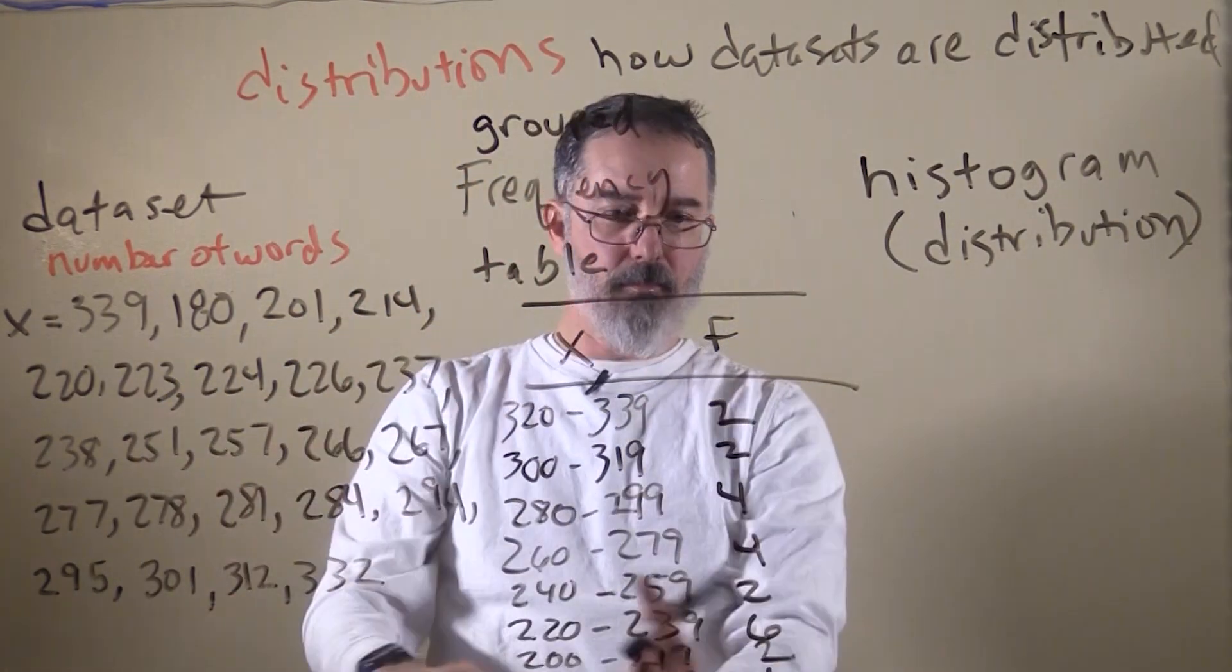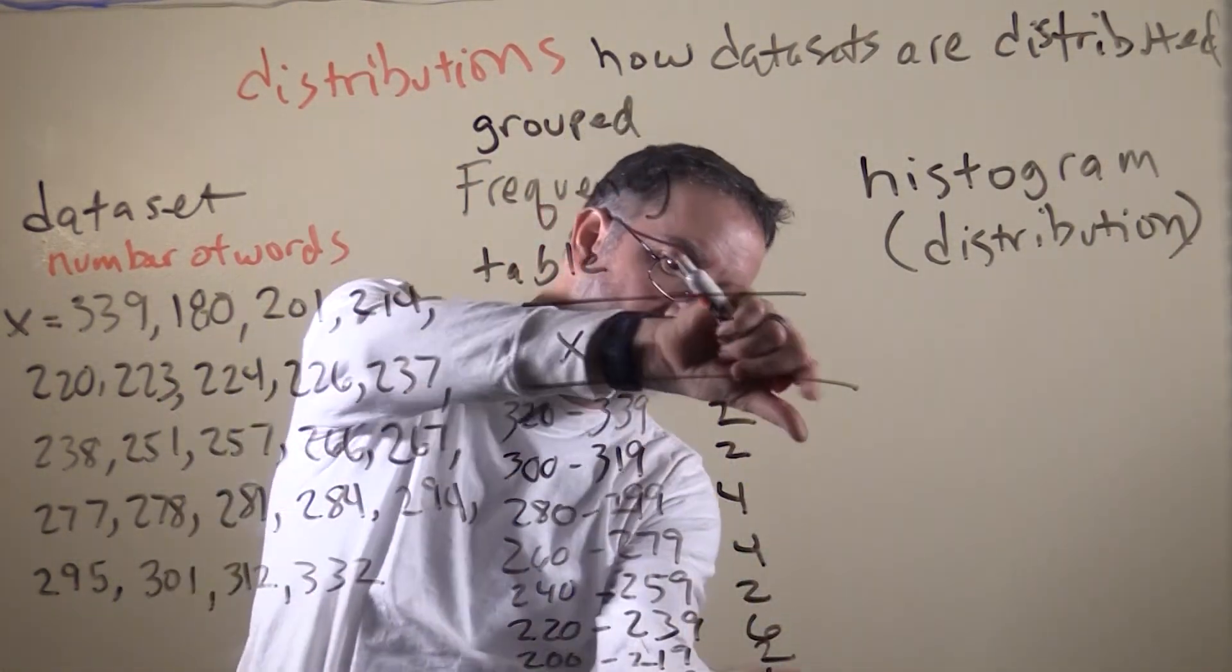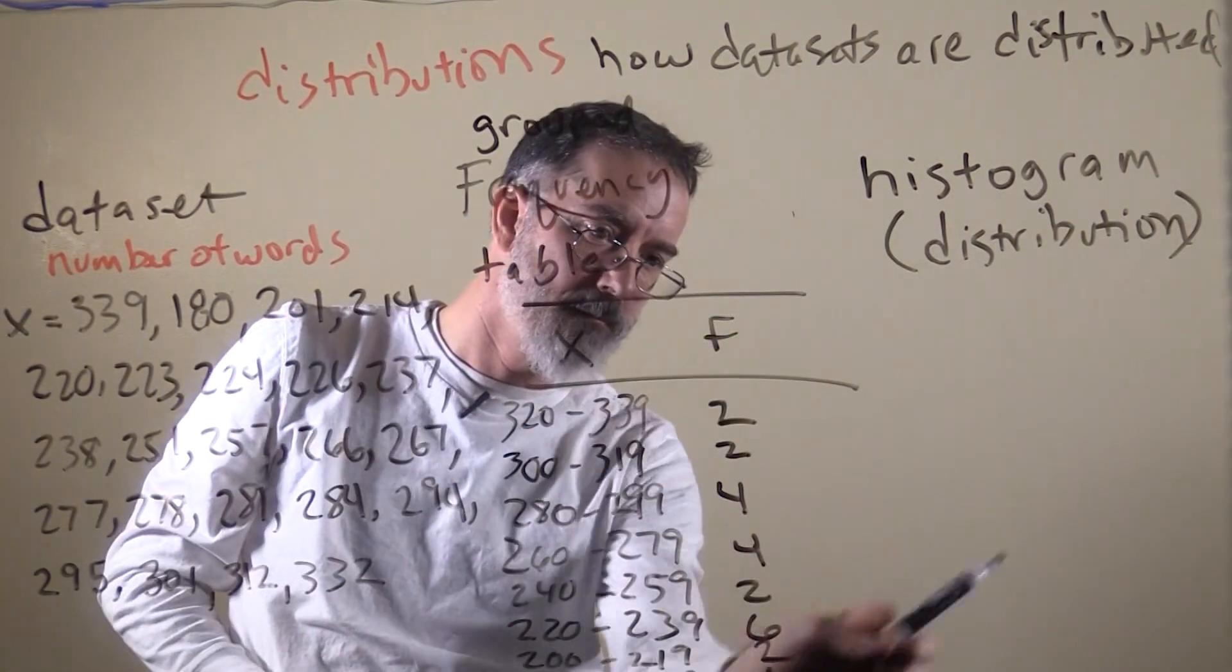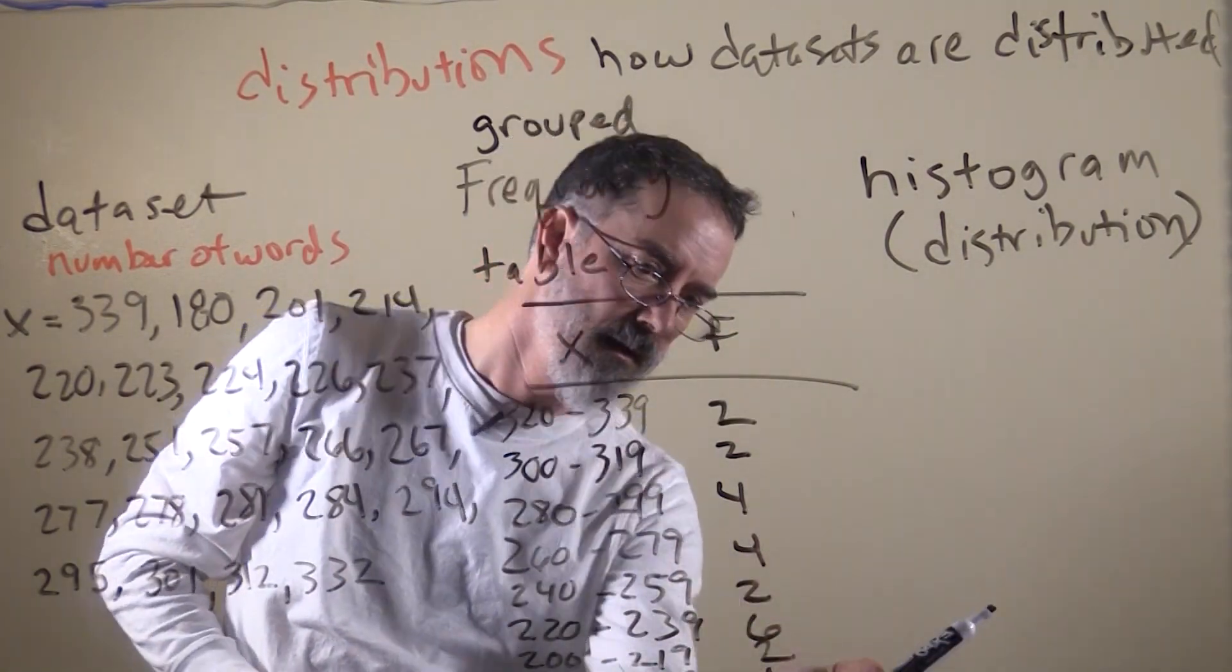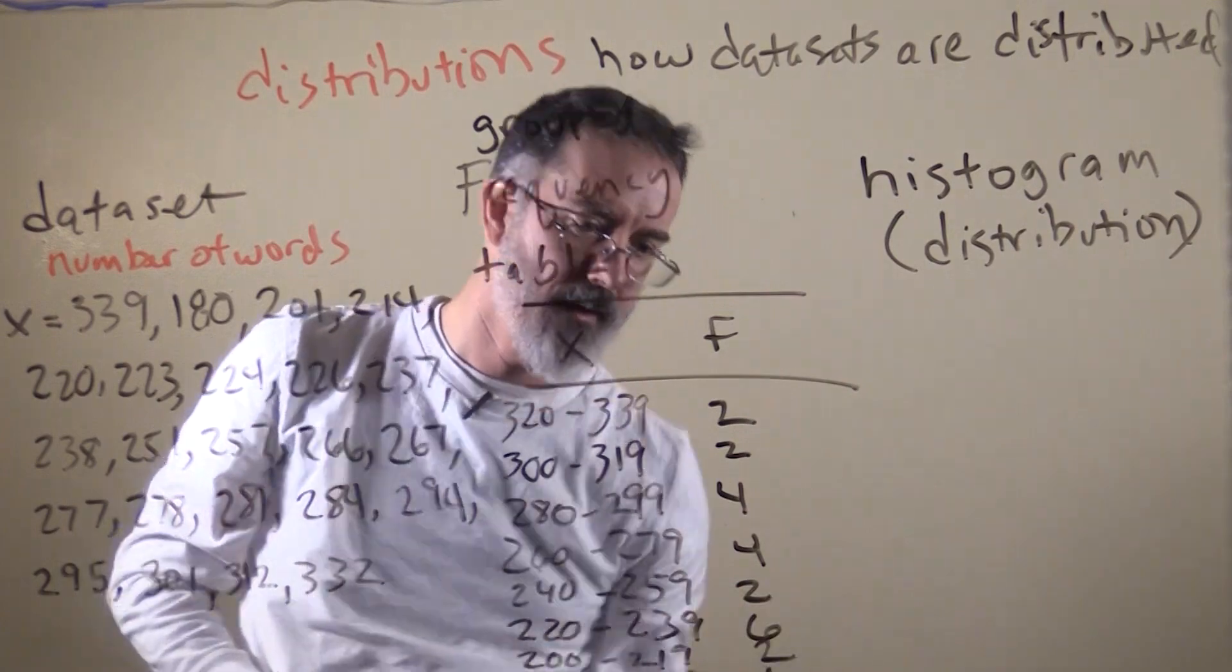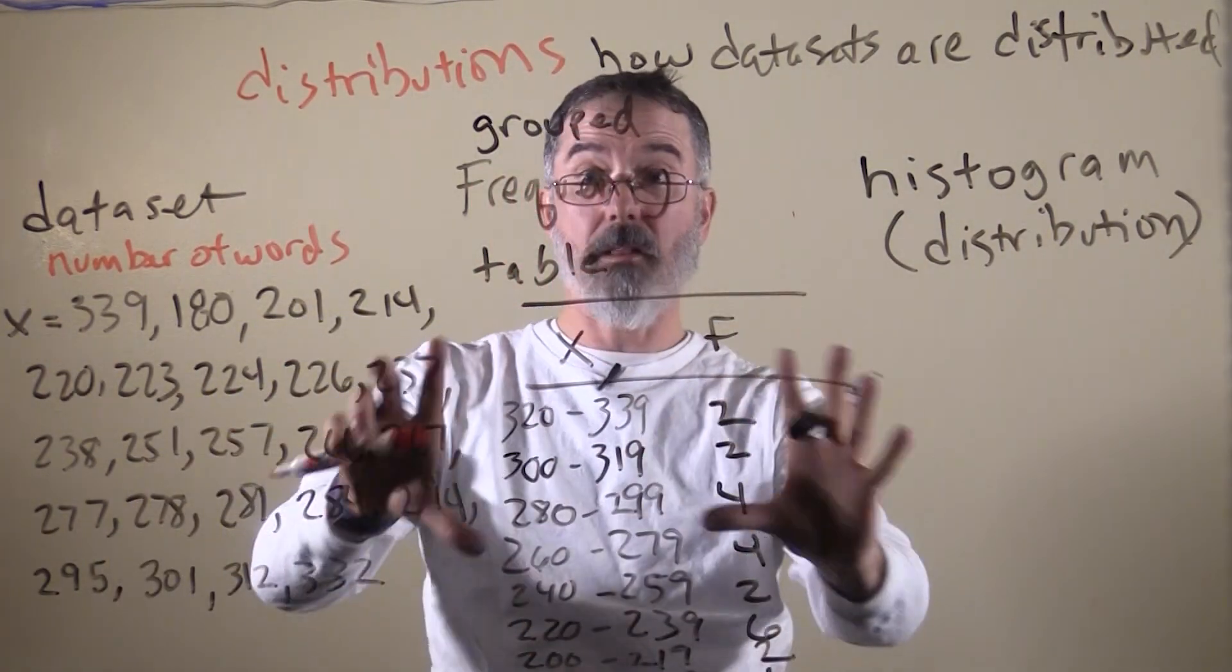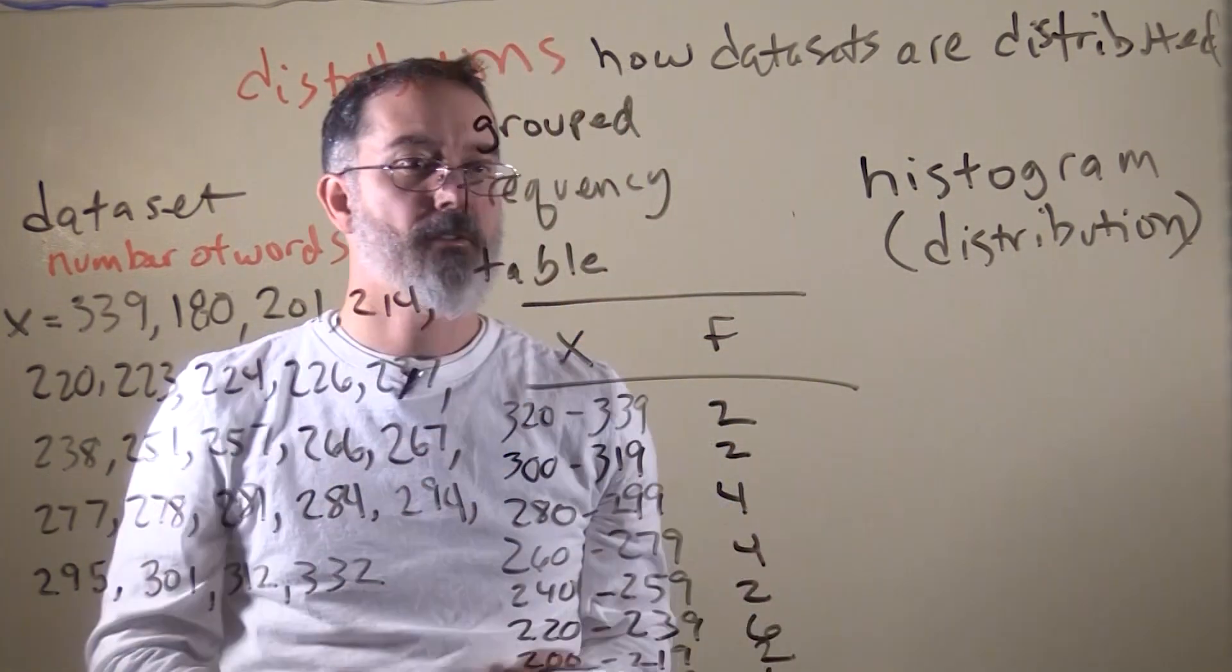This actually nicely summarizes our data set. There is not too many at the ends. There is kind of a grouping towards the middle. There is a relatively low grouping here. But that gives you a sense, at a glance, how the scores are distributed.